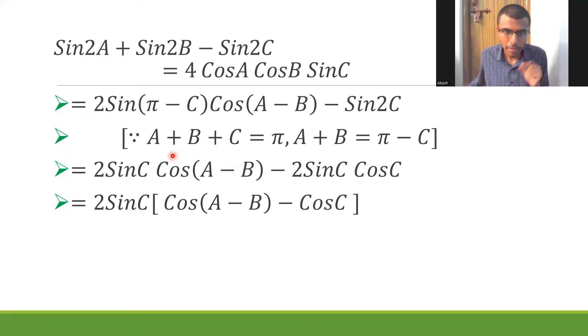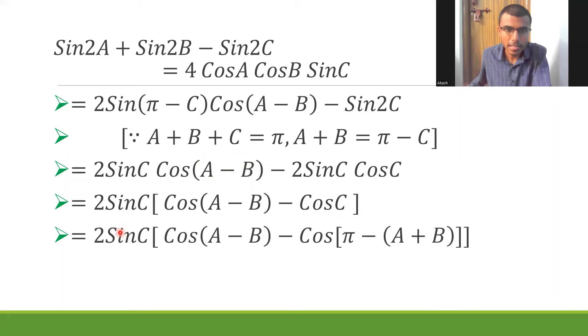Now I want to write this C in terms of A plus B. So what do I have? A plus B plus C is π. So if I keep C here and send A plus B to the other side, I'd be getting C as π minus (A plus B). So basically this would be nothing but 2 sin C into cos (A minus B) minus cos [π minus (A plus B)].